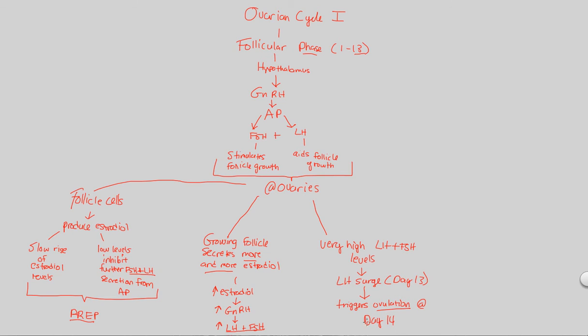It triggers ovulation at day 14. That's our ovulation phase happening. Why is it happening? Because the LH surge happened. Why did the LH surge happen? Because of these downstream effects we covered, this initial LH and FSH release from the anterior pituitary that resulted in a high amount which then resulted in a high amount of LH surging, causing ovulation at day 14.